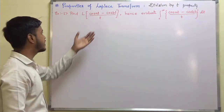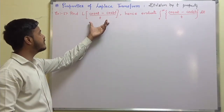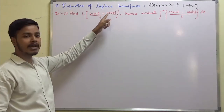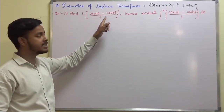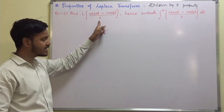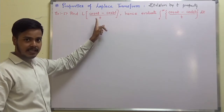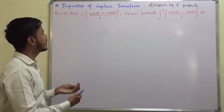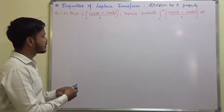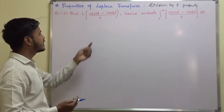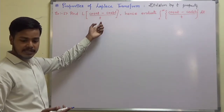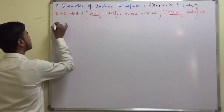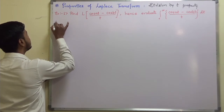Let us concentrate on the first part. We have to find out the Laplace transform of (cos at - cos bt) / t. We can find this out with the help of the property, so we start with the property in our solution.